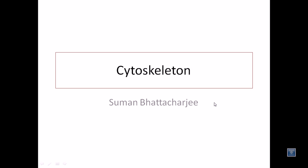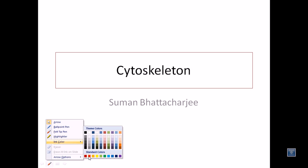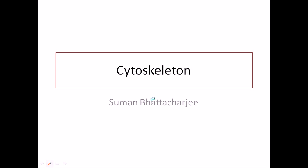The third kind of cytoskeleton is called the microtubule. Microtubules are made up of a protein called tubulin — they are actually made up of protein dimers called tubulin-α and tubulin-β.